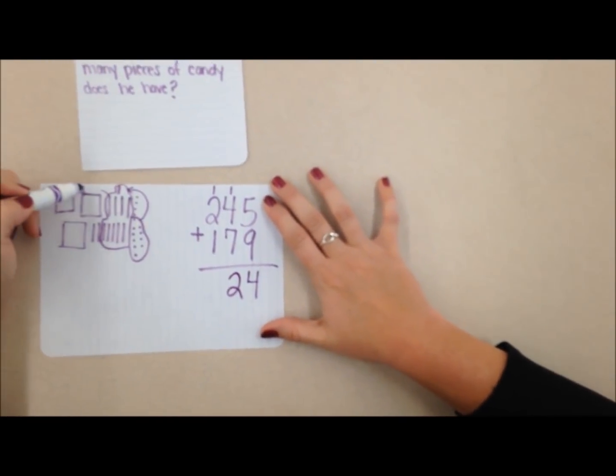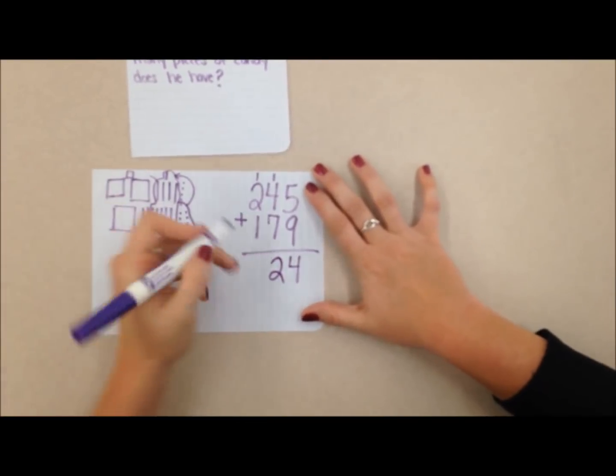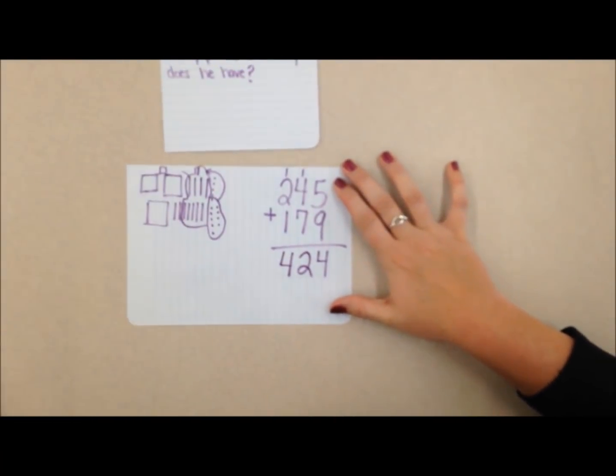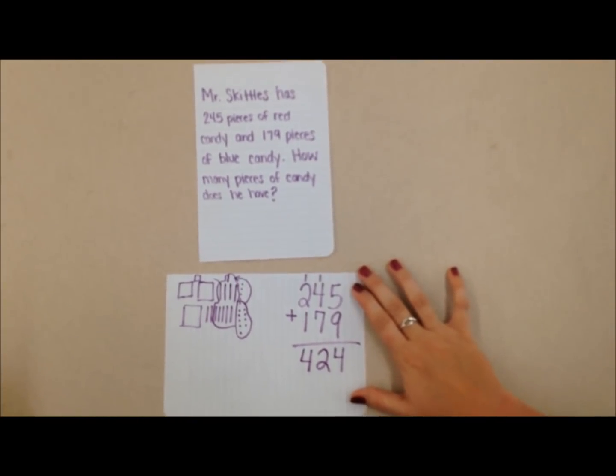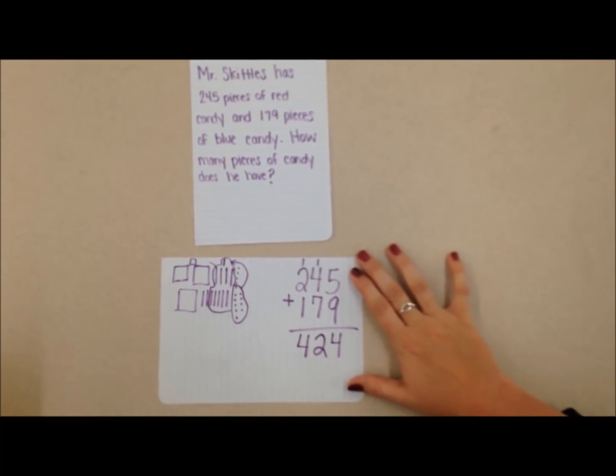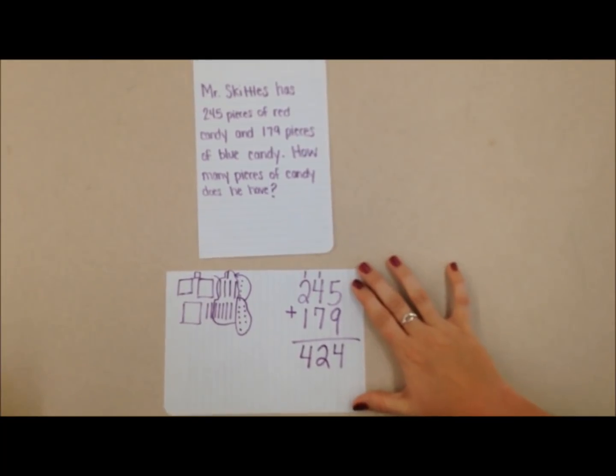And then I have one, two, three, four hundreds. So when he combined his 245 red pieces and 179 blue pieces, he ended up with 424 pieces of candy.